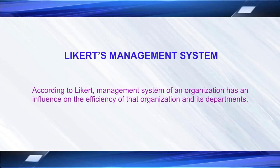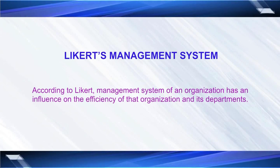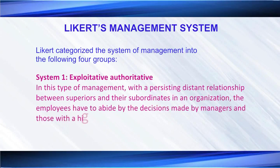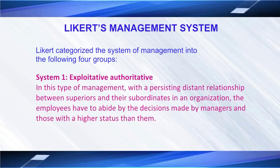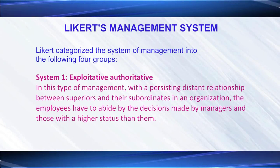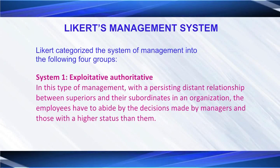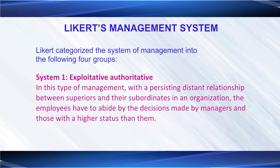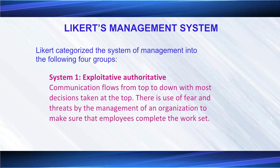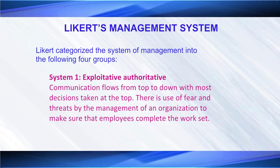Now we will discuss Likert's management system. According to Likert, the management system of an organization has an influence on the efficiency of that organization and its departments. Likert categorized the system of management into four categories. System one is exploitative authoritative: in this type of management there is a persistent distant relationship between superiors and subordinates. Employees must abide by the decisions made by managers, communication flows from top to bottom, and there is use of fear and threat by management to ensure employees complete the task.